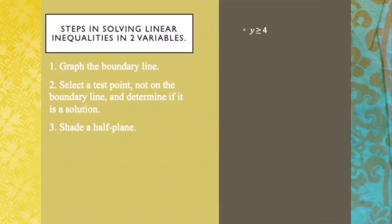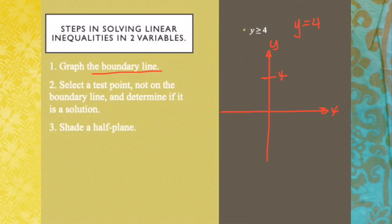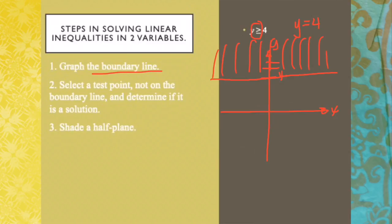Let's take another example: y greater than or equal to 4. The first step is to graph the boundary line y equals 4. We locate 4 on the y-axis. Since the inequality is greater than or equal to, the boundary line is solid. Numbers greater than 4 are 5, 6, 7, and so on. Therefore, the shaded region is above y equals 4.